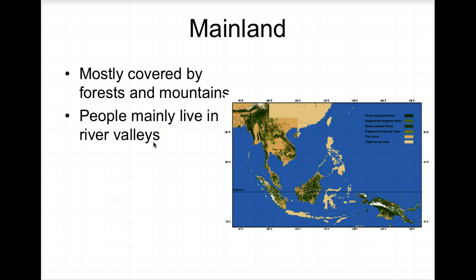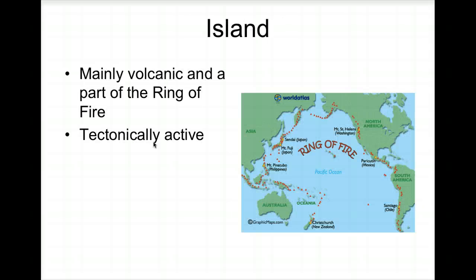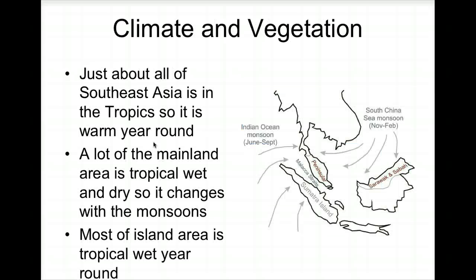The mainland is mostly covered by forests and mountains. People live mainly in the river valleys because that's where the fertile, flat land is — good enough to grow crops. The island part is formed primarily by volcanic processes, with tectonic plates bumping up against one another. This is also where the Ring of Fire is, so it's very tectonically active.